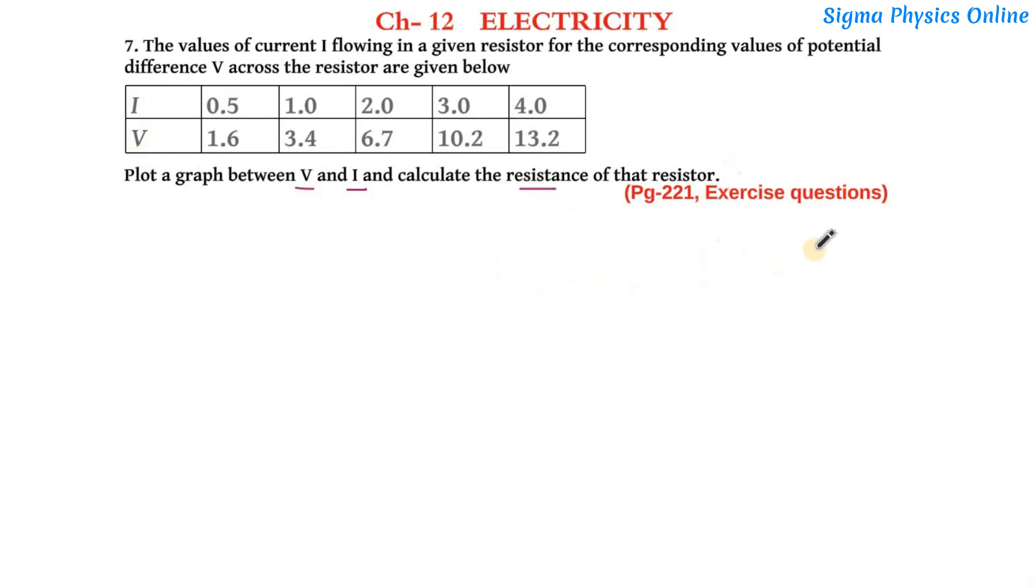Now if you remember Ohm's law, the diagram was like so. This is the circuit diagram from Ohm's law. We know that potential difference varies directly as the current, and as the voltage changes the current also changes. So based on these observations a table was made.